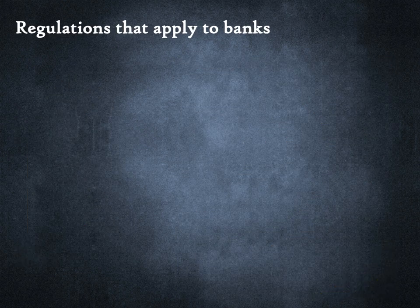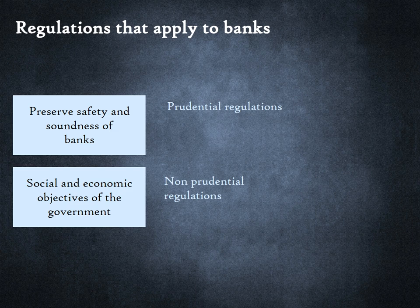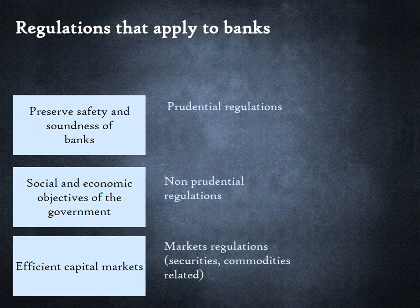There are three major categories of regulations that apply to banks. Safety and soundness-related regulations are called prudential regulations. Regulations related to social and economic objectives are non-prudential regulations. In addition, many of the larger banks have asset management and investment banking divisions, and such banks are subject to markets regulations related to securities and commodities. An overview of market regulations is outside the scope of this lesson.